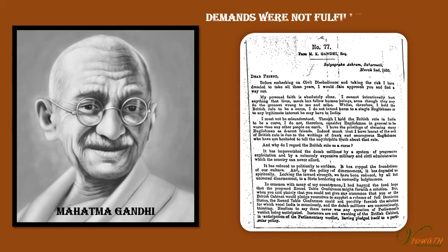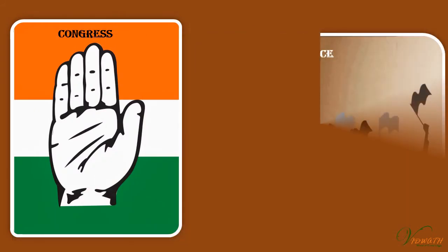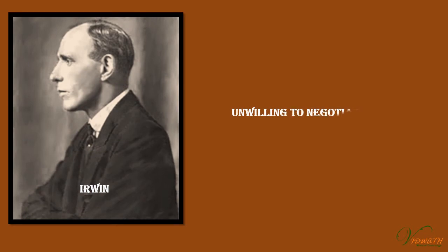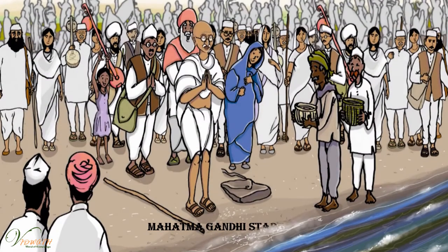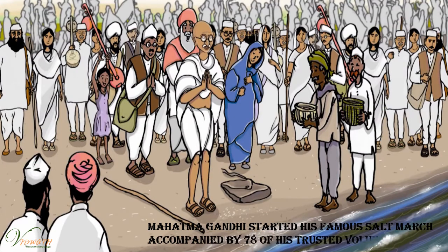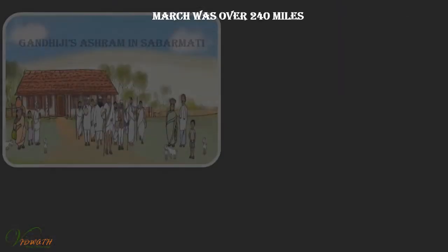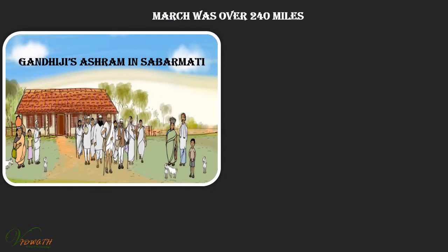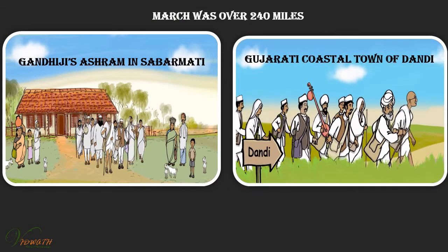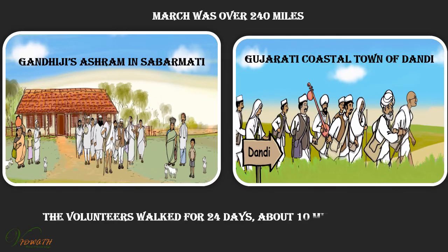If the demands were not fulfilled by 11th March, the Congress would launch a civil disobedience campaign. Irwin was unwilling to negotiate, so Mahatma Gandhi started his famous salt march, accompanied by 78 of his trusted volunteers. The march was over 240 miles from Gandhiji's ashram in Sabarmati to the coastal town of Dandi in Gujarat. The volunteers walked for 24 days, about 10 miles a day.